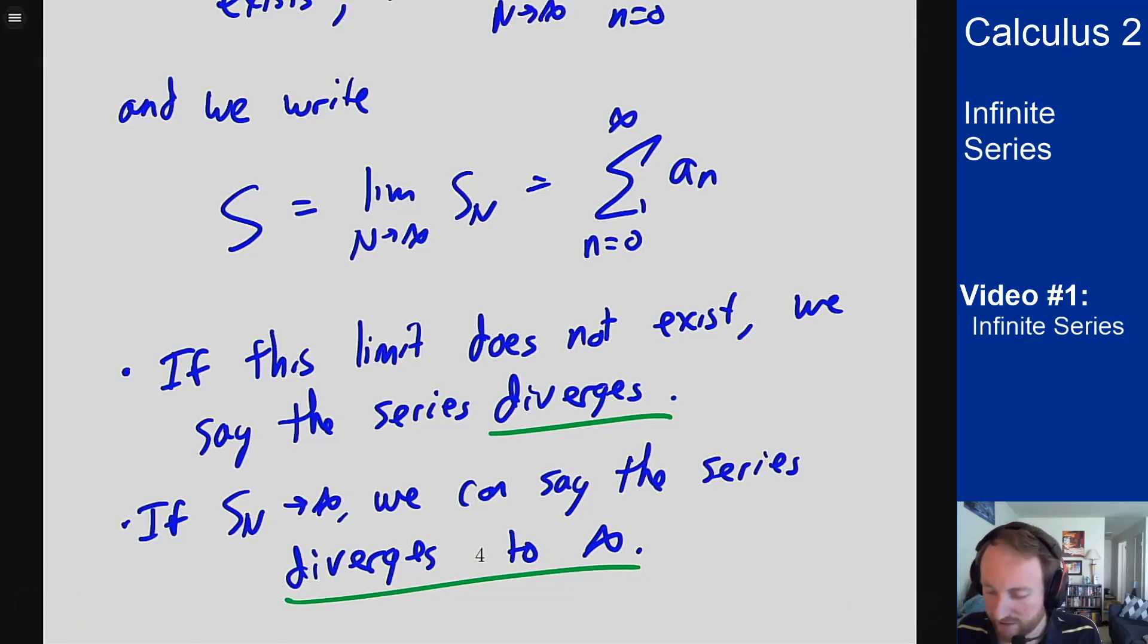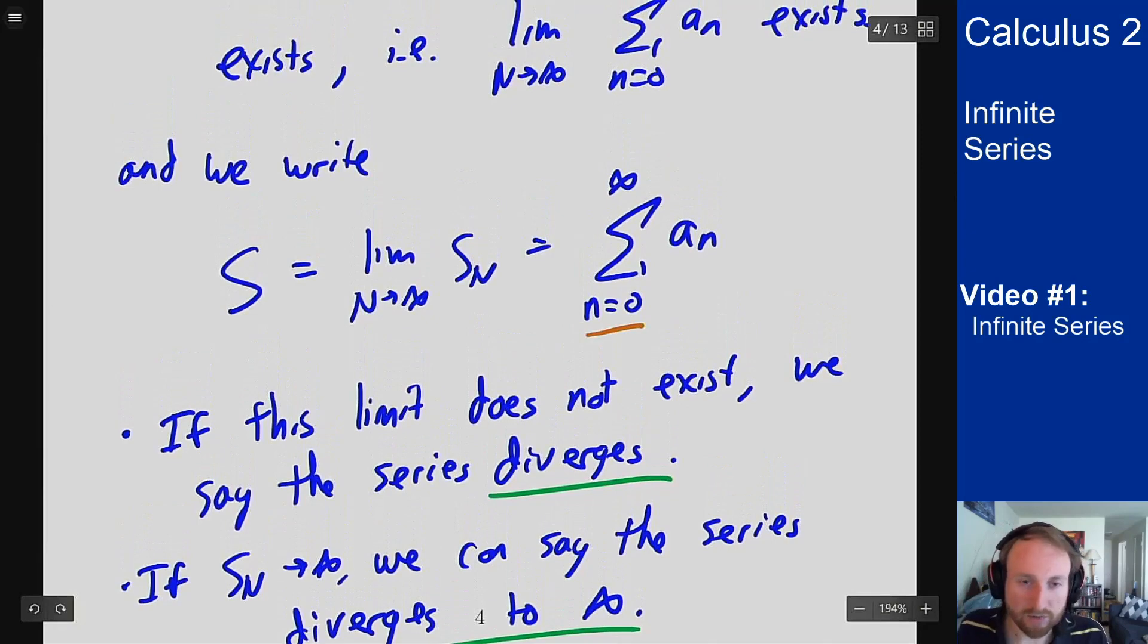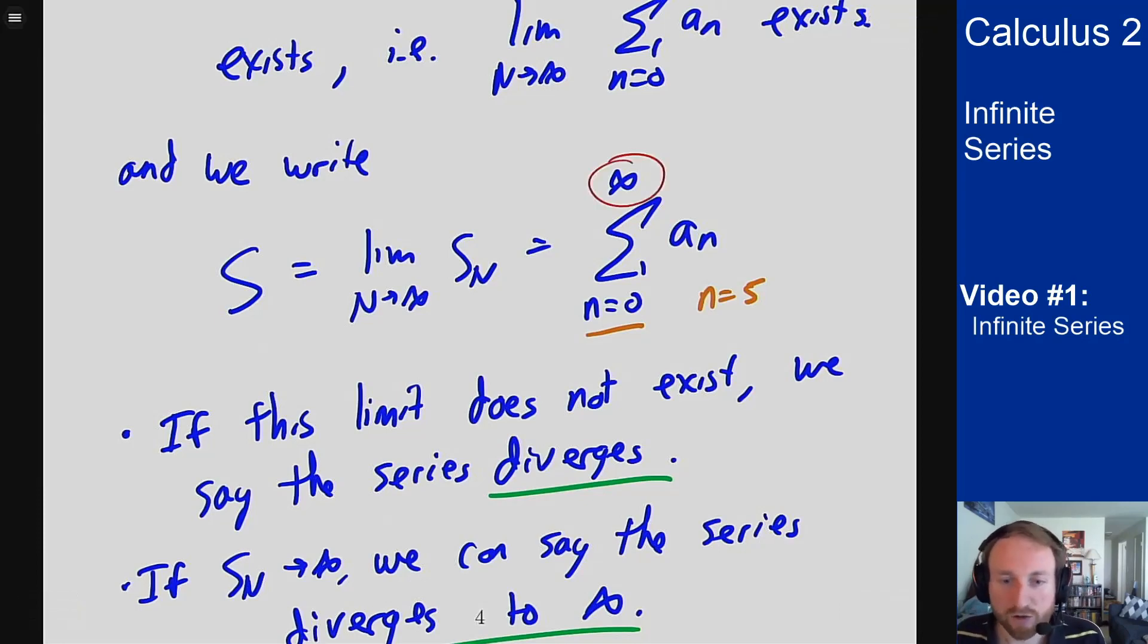Series don't have to start at zero. This could start at any number you want. This could start at n equals five. It doesn't matter. The important thing to be worried about is the infinity as the upper endpoint here. Just like that's how integrals became improper, that's the same reason why I have to be careful when talking about infinite series here as well.